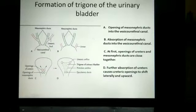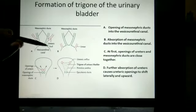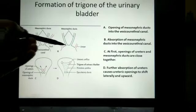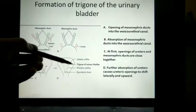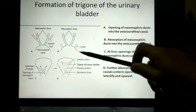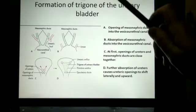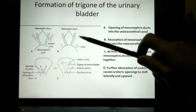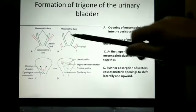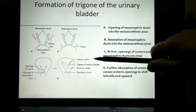Development of the bladder: it is from the upper expanded part of the vesico-urethral canal. The trigone part develops due to absorption of mesonephric ducts. The triangular area develops between the openings of the mesonephric duct and the ureteric bud. Initially these openings are nearer to each other, but as the ureteric opening moves upwards and laterally due to ascent of the kidney, this triangular area forms on the dorsal part of the vesico-urethral canal, forming the trigone of the urinary bladder.